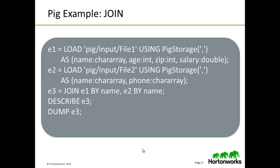Join is another keyword familiar to anyone working with data analysis. We create two relations, e1 and e2, using the load keyword with its parameters. We then create a third relation, e3, by joining e1 and e2 on the common field in their tuples. We use a debugging keyword to verify that e3 contains what we intend, and then cause a MapReduce job by dumping e3.